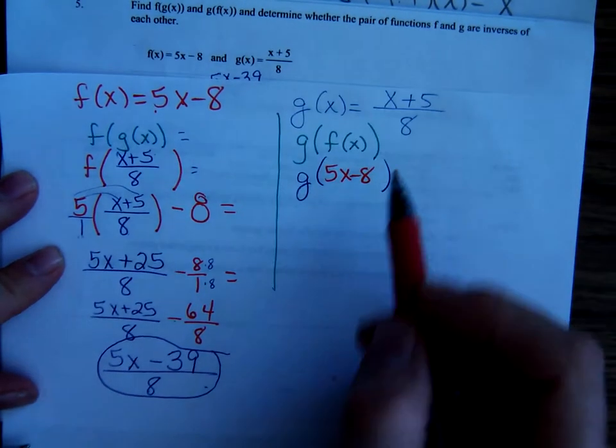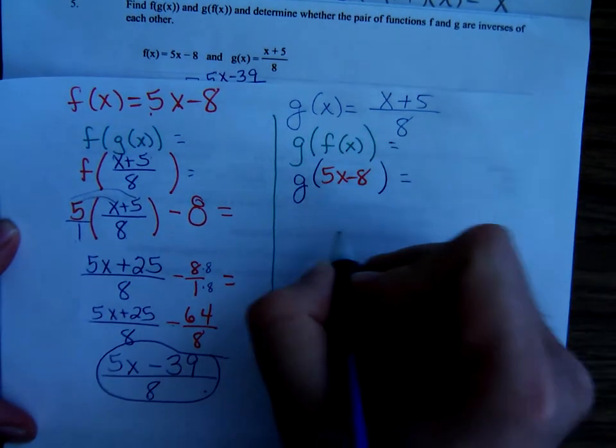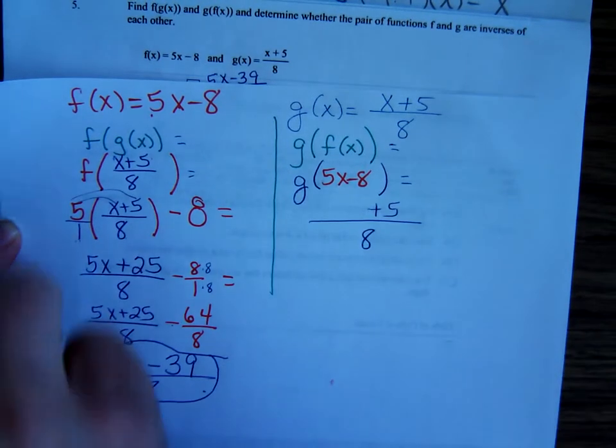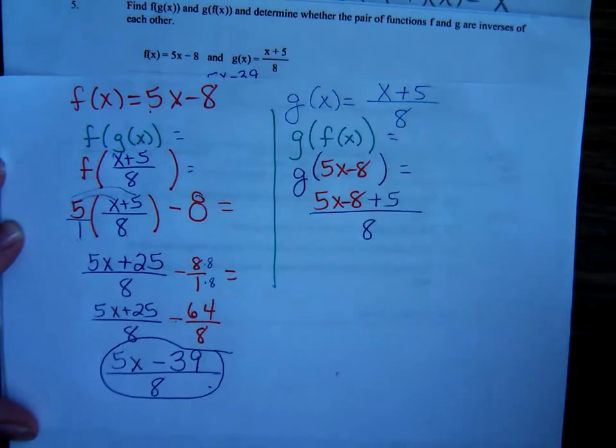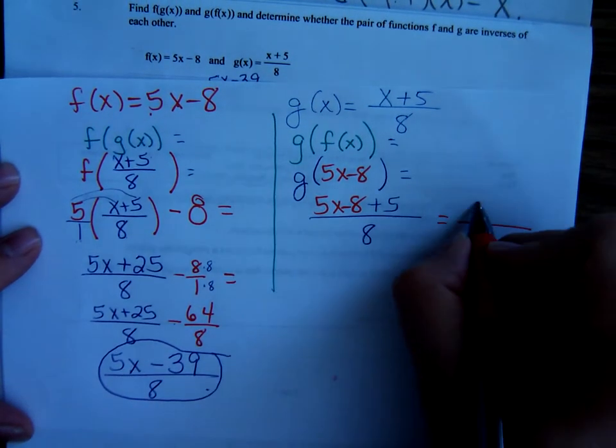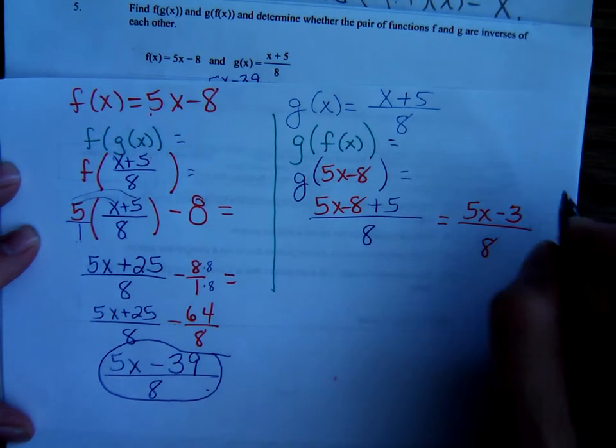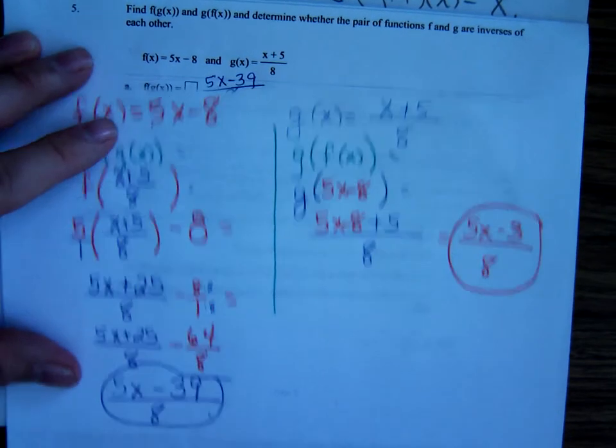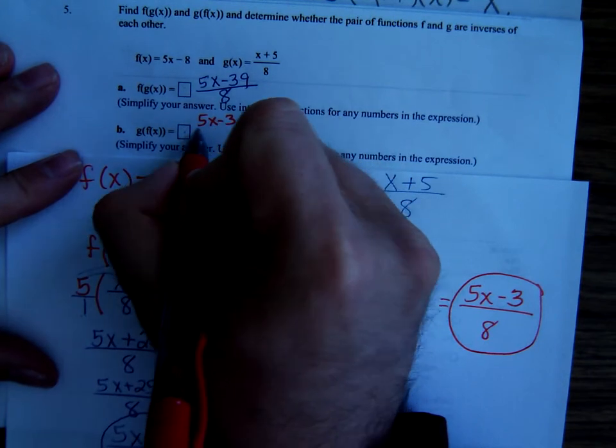That's g of f of x. So go to the function g and in place of that blue x we're going to put 5x minus 8. Oh, this one's going to simplify easier, isn't it? What would we have? We would have just 5x minus 3 all over 8. 5x minus 3 all over 8.